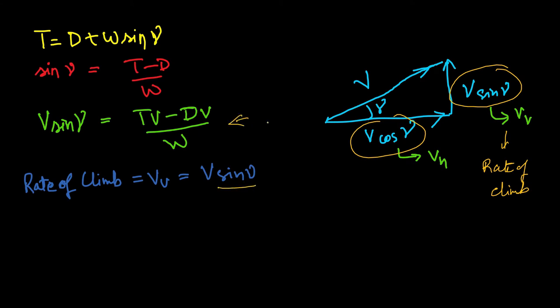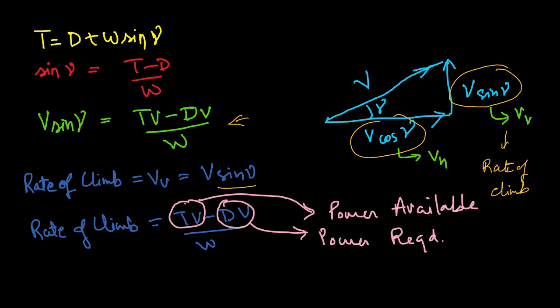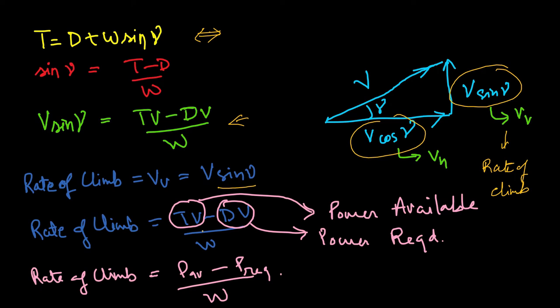From this equation, rate of climb = (T·V − D·V) / W, where T·V is the power available and D·V is the power required. One thing to note is that D·V is the power required for cruise flight, but here we are considering climbing flight. This assumption is valid only when the flight path angle is very small — below about 20 degrees. For flight path angles greater than 20 degrees, the power required must be found from the full equation.